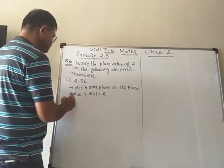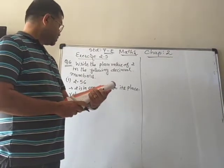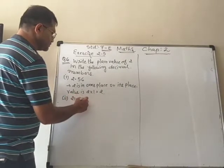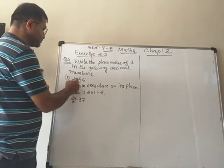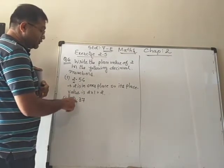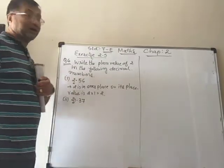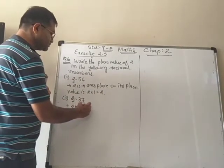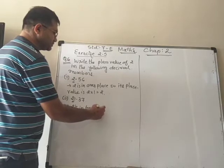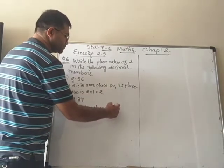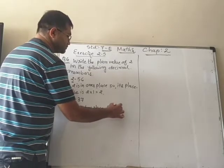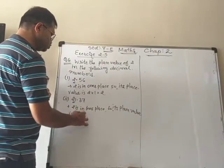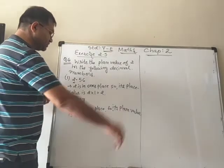The second number is 21.37. Here you can see that 2 is not in the 1's place — the second place is the 10's place. So 2 is in the 10's place, and its place value is 2 multiplied by 10, which equals 20.